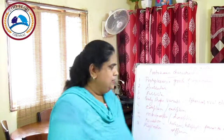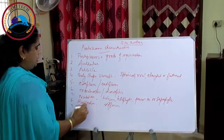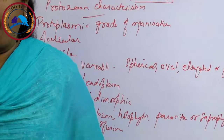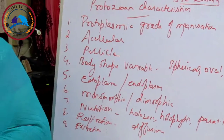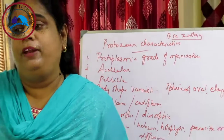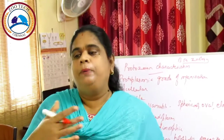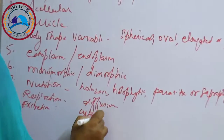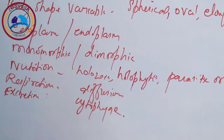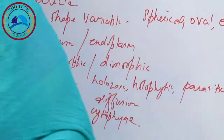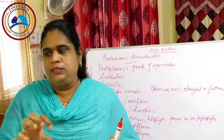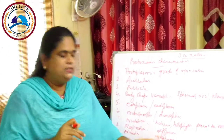Excretion also occurs through the general body surface, but in some forms through a temporary opening in the ectoplasm, or through a permanent pore called the cytopyge. Contractile vacuoles also perform osmoregulation in freshwater forms and help in removing excretory products.